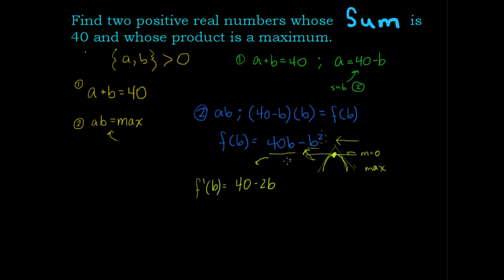Now this function here tells us the slope at any point b. The original function looks like this, but this is the function that tells us the slope at any point b. If we want to find where the slope is zero for the maximum value, then we set it equal to zero and solve for b.